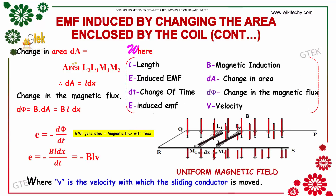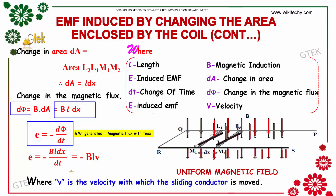The change in area dA is equal to the change in area of L1, L2, M1, M2, which gives L into dx, so dA equals L·dx. Therefore d-phi equals B into dA, that is B·L·dx. Replacing d-phi with B·L·dx, we get E equals minus B·L·dx divided by dt. Since dx divided by dt equals V, where V is the velocity with which the sliding conductor moves.